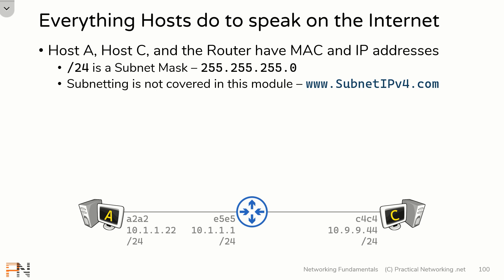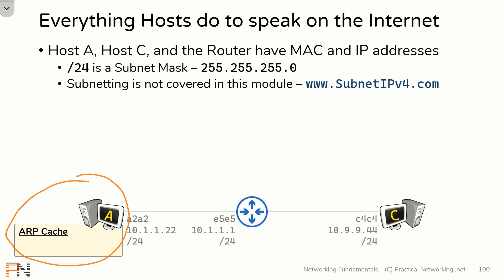In the first part of this lesson, we mentioned that anything with an IP address has an ARP cache. Host A, the router, and host C all have IP addresses, so all three of them have an ARP cache. But in this video, we're going to be focusing on host A, so we're only going to show you host A's ARP cache.